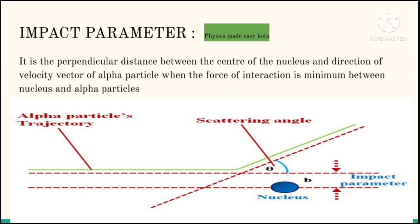We can see from the figure that impact parameter is a perpendicular distance between the center of the nucleus and the direction of the velocity vector of alpha particle, when the force of interaction is minimum between the nucleus and alpha particle.